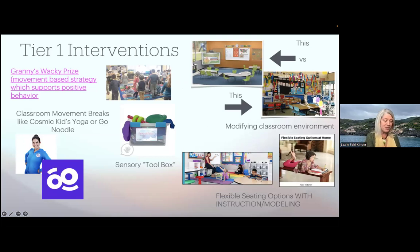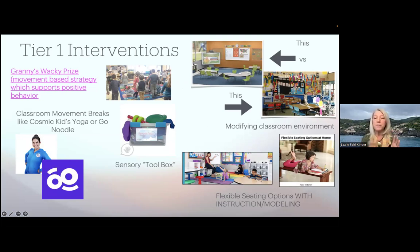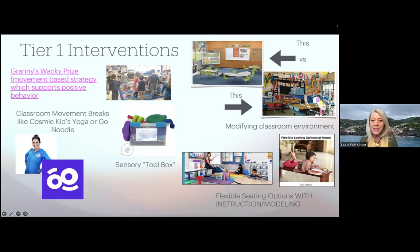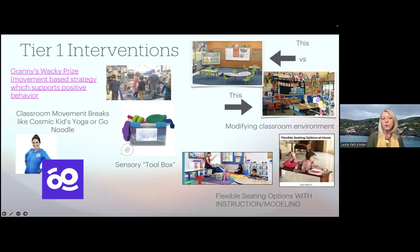Here are some pictures of tier one interventions. Starting at the top right and moving clockwise: an example of modifying a classroom environment — a visually calm environment versus a visually cluttered environment can make a world of difference for a child. Or providing instruction and modeling for flexible seating options in the classroom. Or suggesting a sensory toolbox or movement-based videos like Cosmic Kids Yoga or GoNoodle videos based on observation of the context.